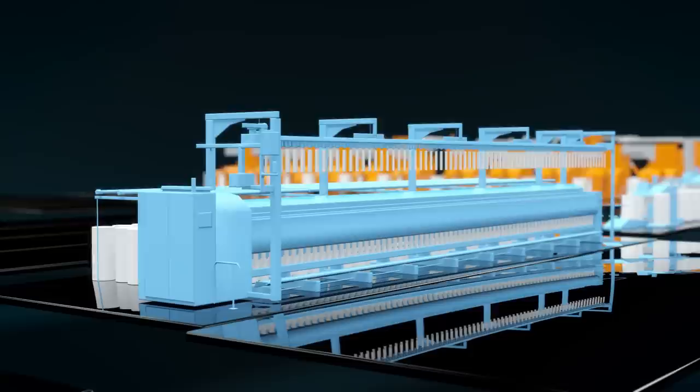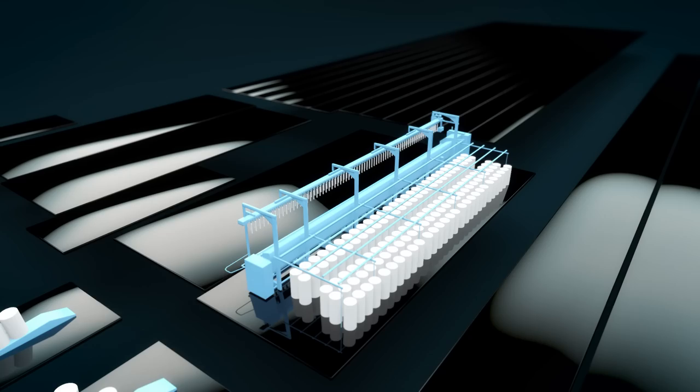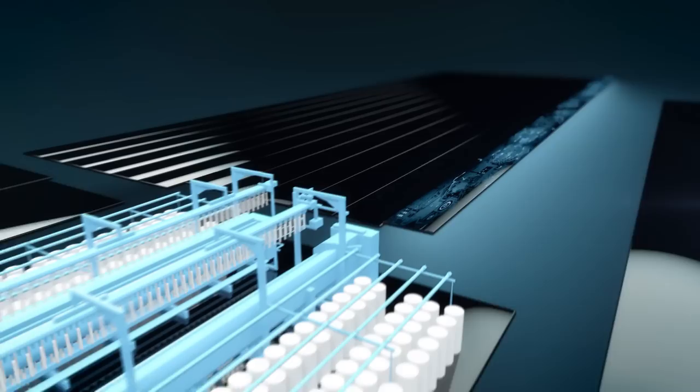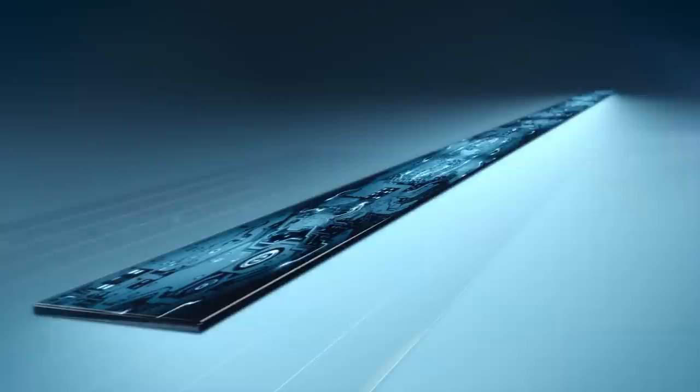From the draw frame sliver, the roving frame forms a preliminary yarn or roving. After passing the drafting unit of the roving frame, the sliver is given a slight twist for the first time in the process to increase the strength of the roving.